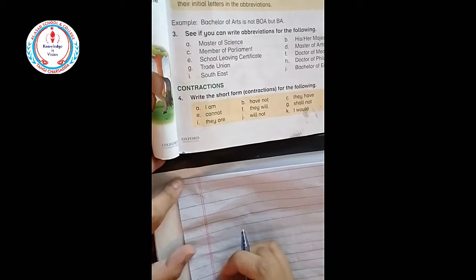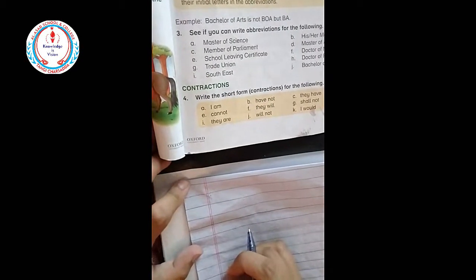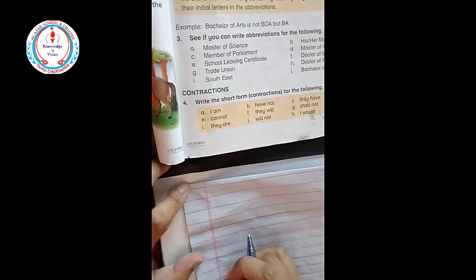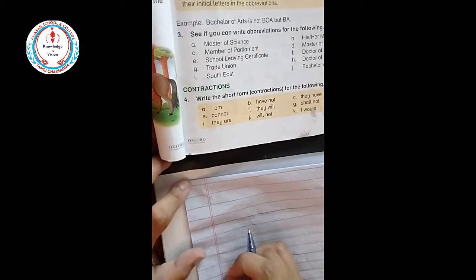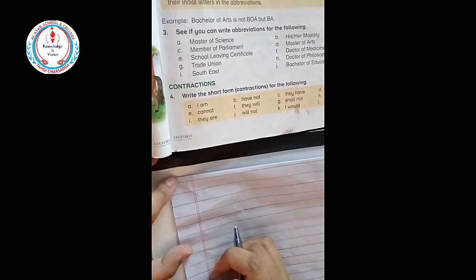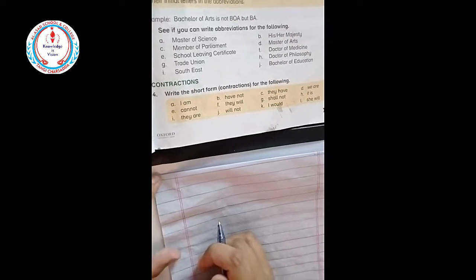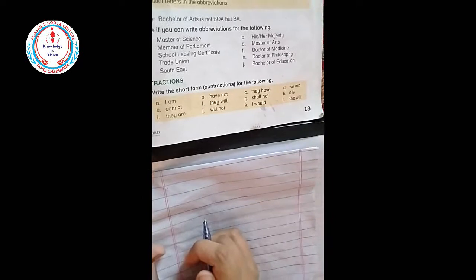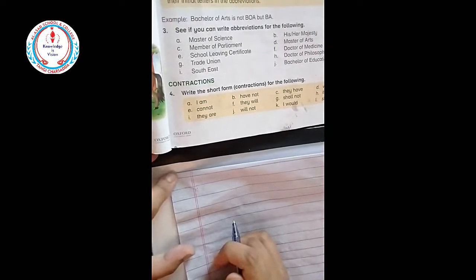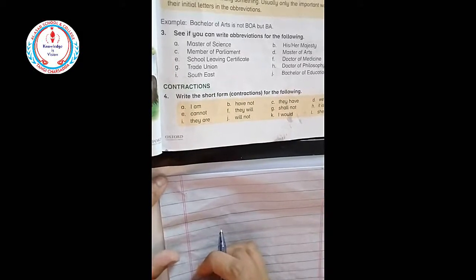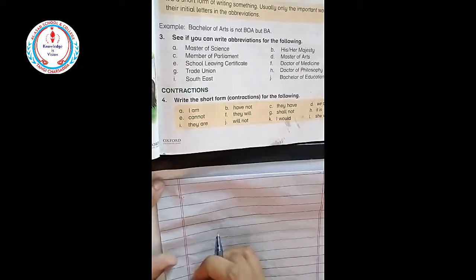Question number two: abbreviations. Do you remember what an abbreviation is? Do you know what an abbreviation is? It's a short form of writing something. It is a method of writing something in short form.